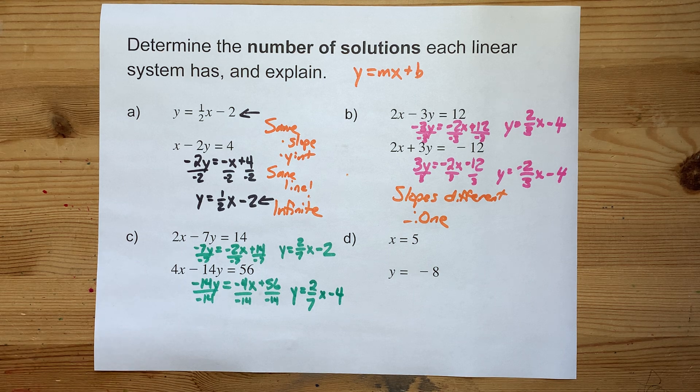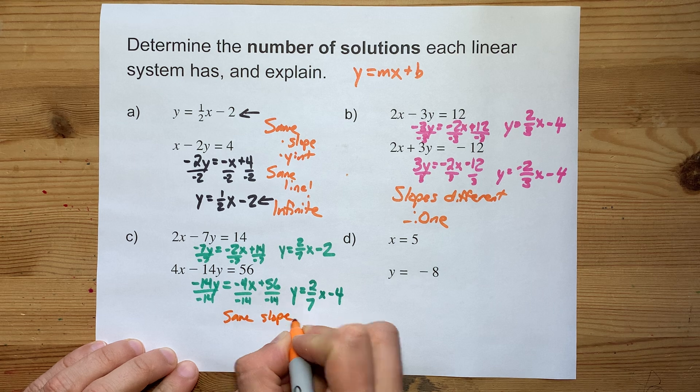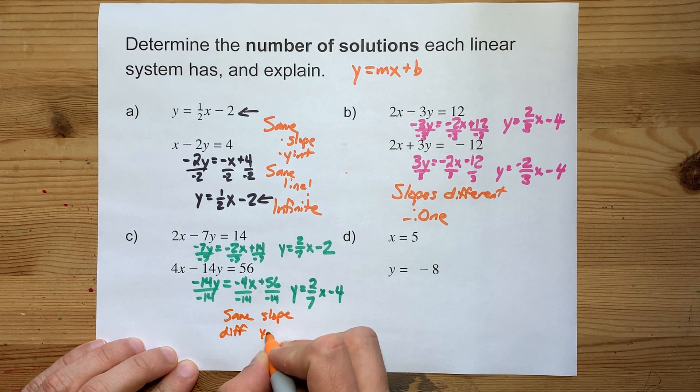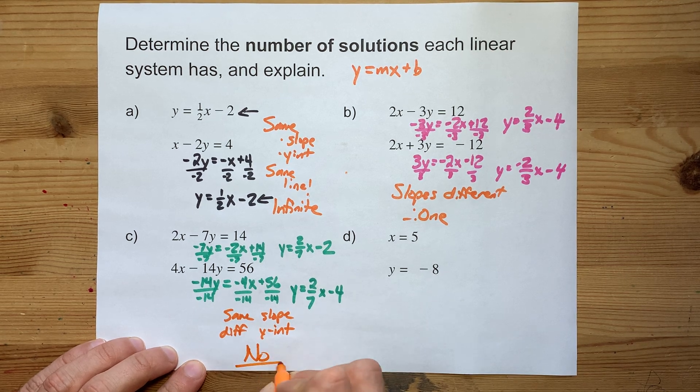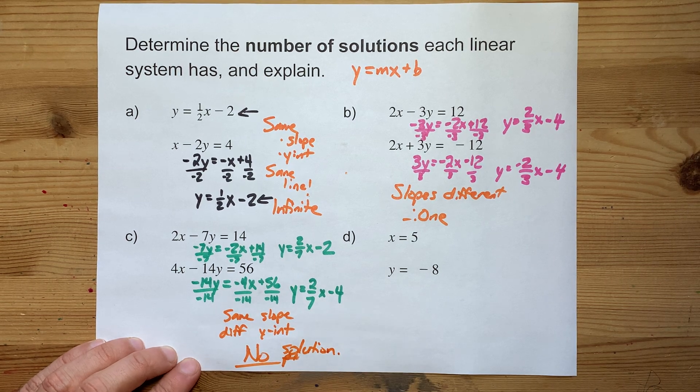These ones have the same slope. The slope is positive 2 over 7 for both, but they do have different y-intercepts. That means there are no points of intersection or no solution.